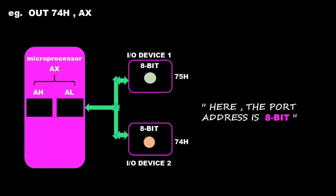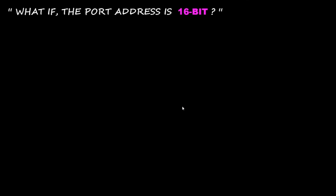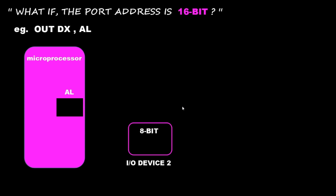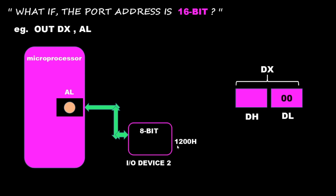To summarize: the destination is the 8-bit port address and the source is a 16-bit register, so the 16-bit data stored in AH and AL is sent to the respective ports after execution. Now, what if the port address is 16-bit? Suppose the microprocessor has an AL register and a port at address 1200h — a 16-bit number. Just as with the IN instruction, this port address is first stored in the DX register: DH holds 12h and DL holds 00h. After execution, the 8-bit data from AL moves to port address 1200h.